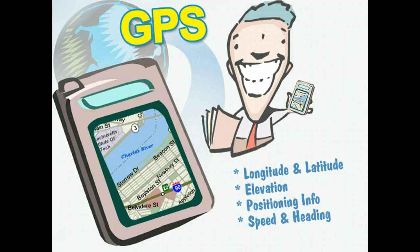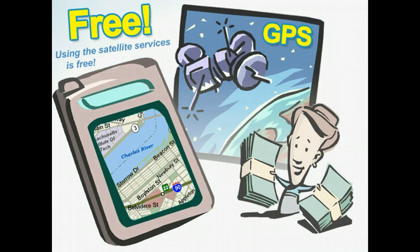Along with the positioning information, a GPS unit can also tell the speed and heading that the unit is currently traveling. Best of all, once you own the device, using the satellite services is free.